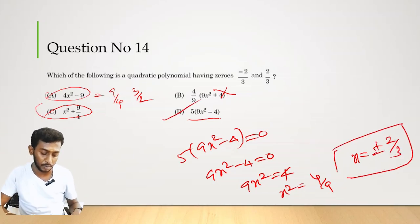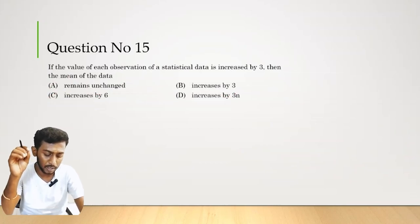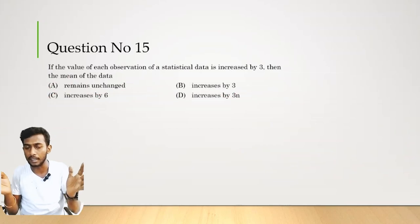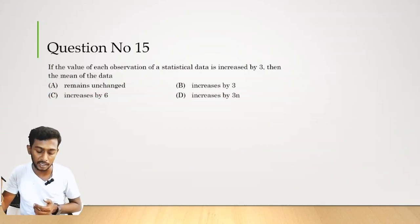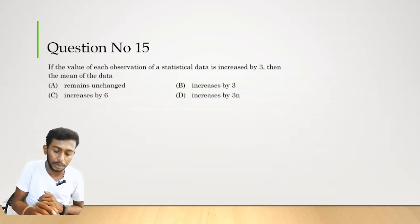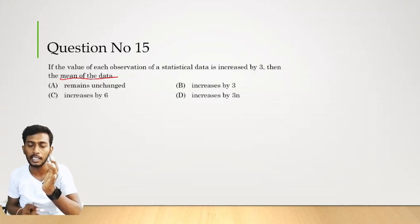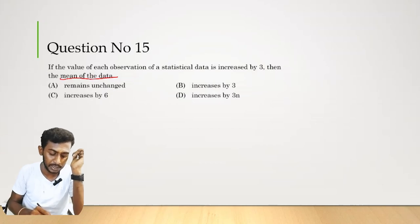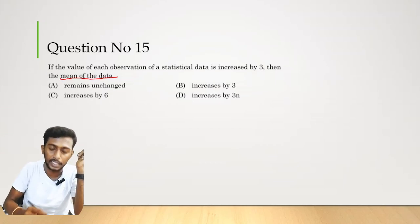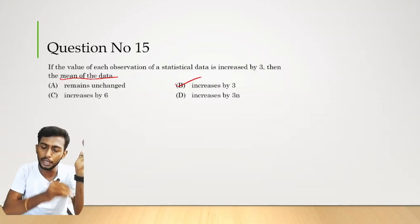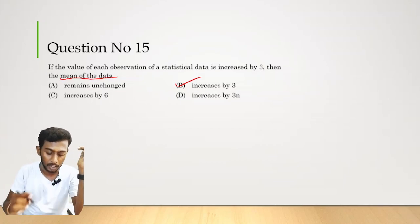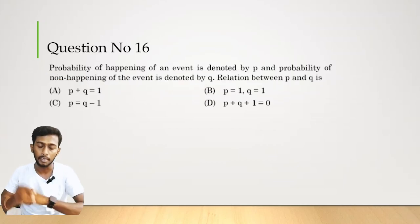Question number 15. The value of each observation of a statistical data is increased by 3. When all data values increase by 3, the mean also increases by 3. Therefore option B is the answer — the mean increases by 3.